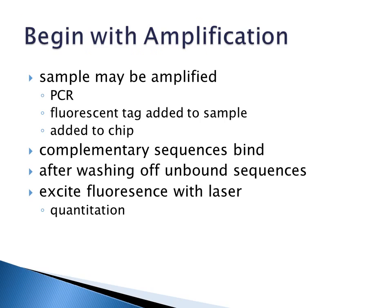Many array systems begin with amplification — you amplify your genes using polymerase chain reaction and add a fluorescent tag to your sample before adding it to the chip. The nucleic acid from your cells complementarily binds to sequences on the chip, unbound sequences are washed off — just like a southern blot — and then you excite the fluorescence using a laser. The computer system then quantifies the fluorescence levels.